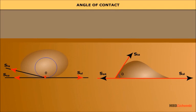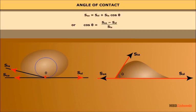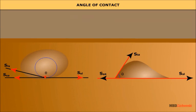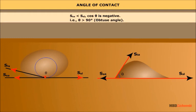Let theta be the angle of contact between the liquid and the solid. There are three types of interfaces formed during contact of liquid and solid: liquid-air, solid-air, and solid-liquid interfaces. Let S_LA, S_SA, and S_SL be the surface energies corresponding to these three interfaces. The equilibrium condition gives: S_SA = S_SL + S_LA × cos(theta), where theta is the angle of contact.